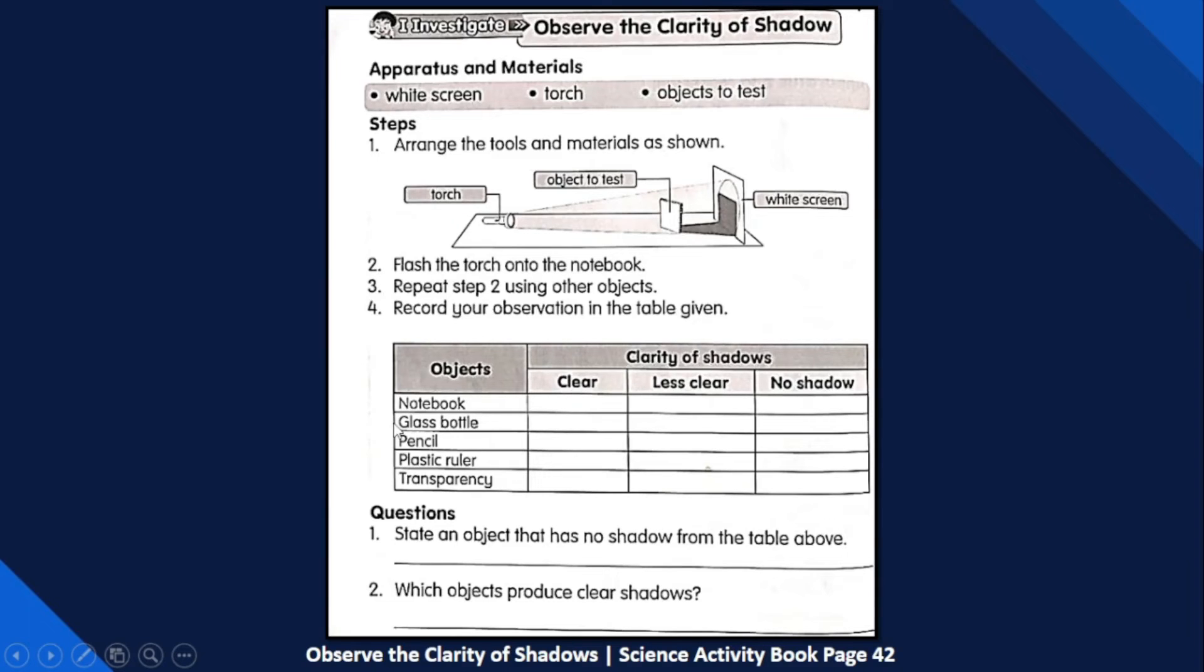To complete this table, you will only have to tick the column. For example, for the notebook, remember: is it clear shadow, less clear shadow, or no shadow at all? It's clear shadow, so just tick it here. You will do the same thing with the other materials until transparency. After that, you are required to answer these two questions.